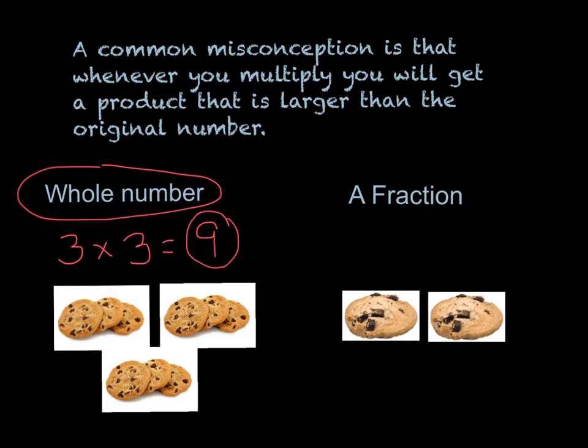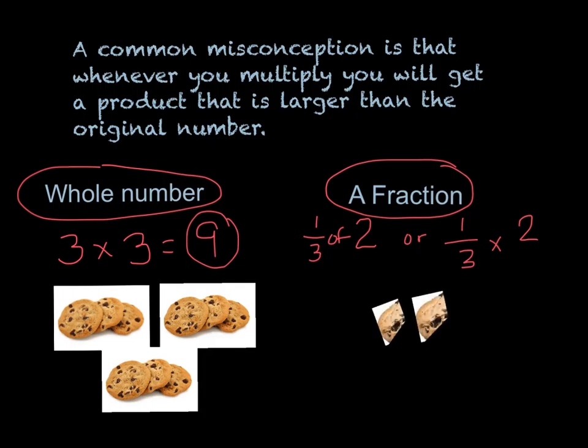But when I am multiplying by a fraction, so if I were to multiply two cookies over here, and I wanted to find out what is one-third of two, or what we would say is one-third times two, we will find that we will get a much smaller number than the two whole cookies that we originally started with.